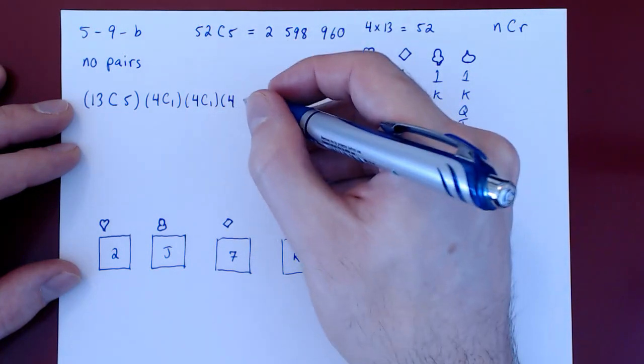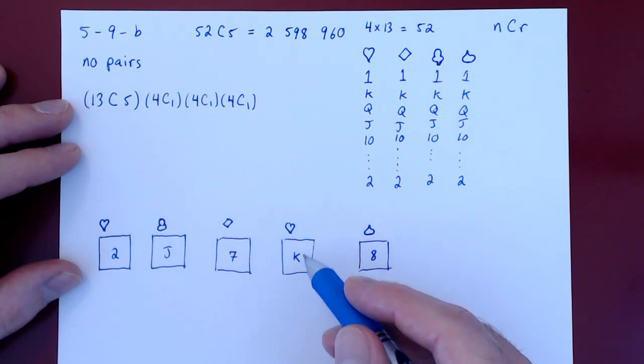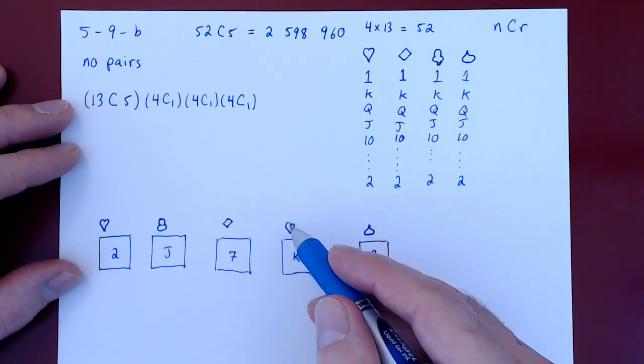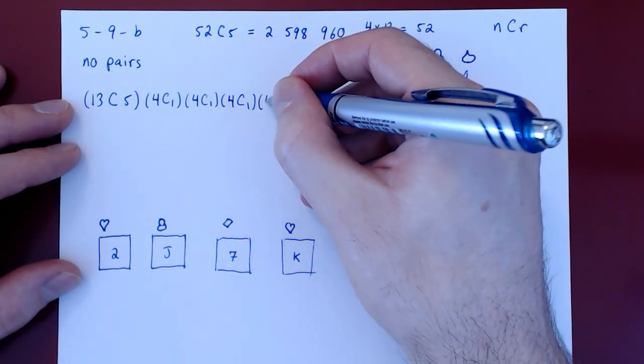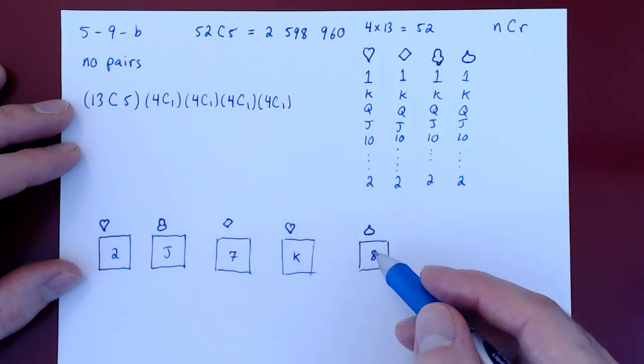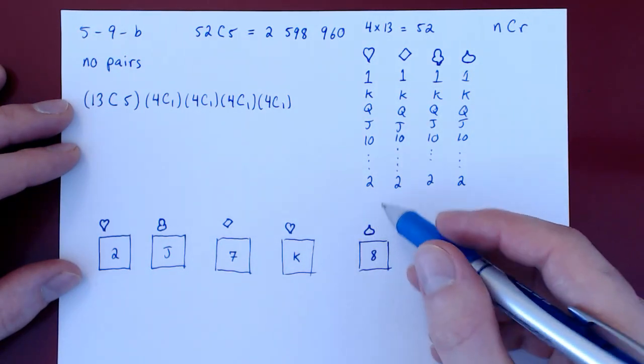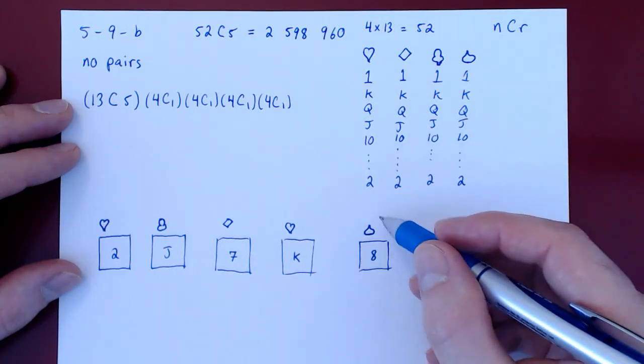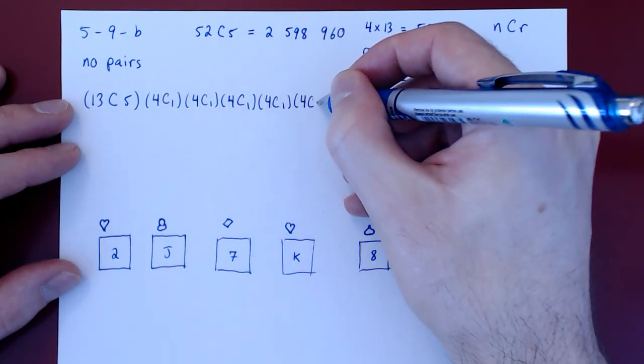Same argument for the fourth card. We have to choose the suit of the king. Four kings to choose from, we choose one. And finally, what is the suit of our last card, the eight? There are four suits to choose from, four distinct eights, four possibilities. Out of the four eights, we choose one.